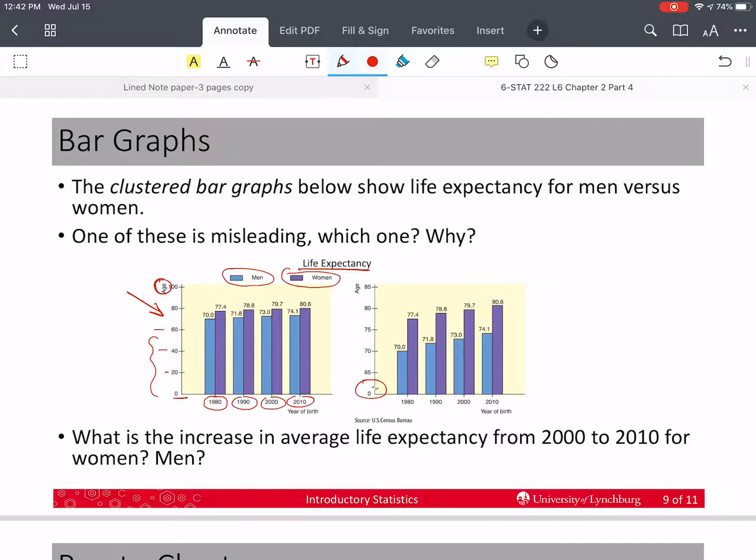Now, here's a question. What's the increase in average life expectancy from 2000 to 2010 for women? So women are the purple. So I can look at this value and this value. And so for women, it's going to be 80.6 minus 79.7, which is equal to 0.9 years. For men, it's going to be 74.1 minus 73.0, which is 1.1 years.